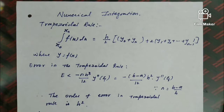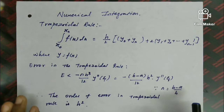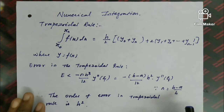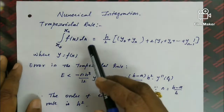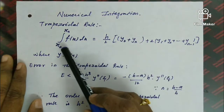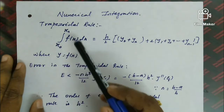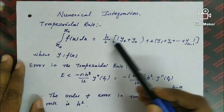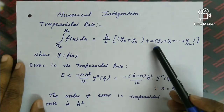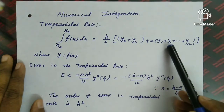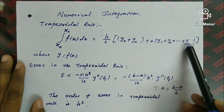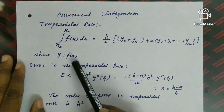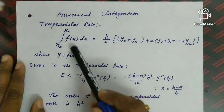Welcome to the lecture series of Numerical Methods. In Numerical Methods, we begin with Numerical Integration, specifically the Trapezoidal Rule. The formula is: integral from x₀ to xₙ of f(x) dx equals h/2 times [y₀ + yₙ + 2(y₁ + y₂ + ... + yₙ₋₁)], where y = f(x). This is the Trapezoidal Rule.